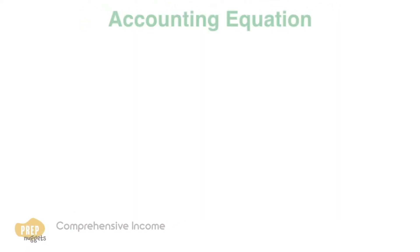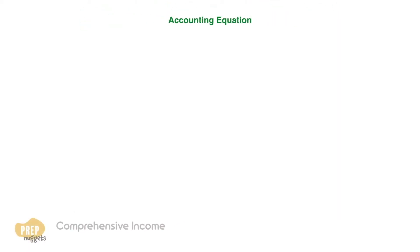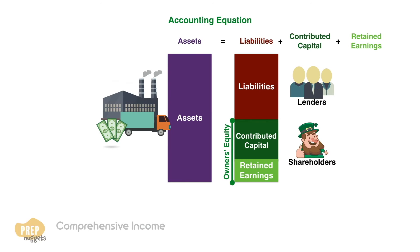Recall the accounting equation learned earlier in the topic on financial reporting mechanics. To balance the accounts of a company, the recorded assets should be equal to the total liabilities plus contributed capital from shareholders and retained earnings.